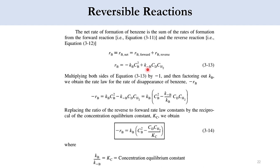Multiplying both sides by -1 gives -R_B, the rate of disappearance of benzene. Benzene is the reactant being removed from the system. So: -R_B = K_B · C_B² - K_{-B} · C_D · C_{H₂}. Taking K_B common from the bracket: -R_B = K_B · [C_B² - (K_{-B}/K_B) · C_D · C_{H₂}].